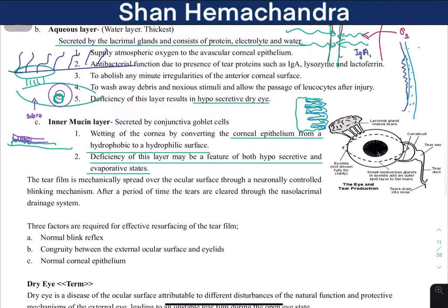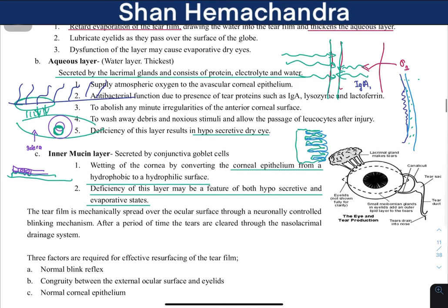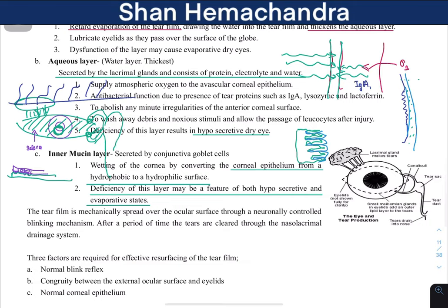Next, let's look at the drainage pathway. The lacrimal glands produce the aqueous layer; the different organs produce the different layers of tears, covering the whole eye with the movement of the eyelids. We have the puncta, which are the openings to the lacrimal canaliculi, which open into the lacrimal sac, then into the nasolacrimal duct, and finally into the nasal cavity.